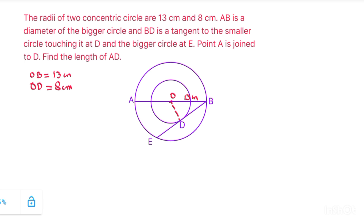BD is a tangent to the smaller circle touching the bigger circle at point E. If we join AD, we have to find the length of side AD. OD is the radius of the smaller circle, which is 8 centimeter, and OB is the radius of the bigger circle, which is 13 centimeter.